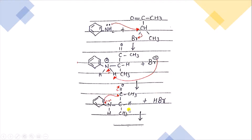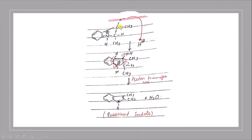In the next step, the lone pair on nitrogen moves forward, and the electron density in the ring attacks this carbon. The electrons transfer to the oxygen, giving us an intermediate structure with an O negative.